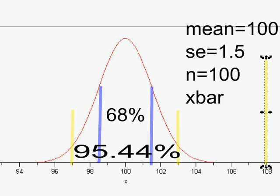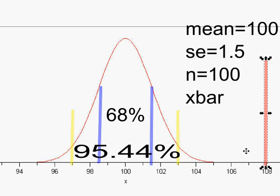There are two explanations. Explanation one: you just got a weird sample — your 100 people happened to be extremely smart. That's possible, just like flipping a coin 10 times and getting all heads. But at some point you have to start doubting whether it's a fair coin — after 10, 100, or 200 heads in a row? Everyone has to set their own threshold for when they stop believing the average IQ is really 100.